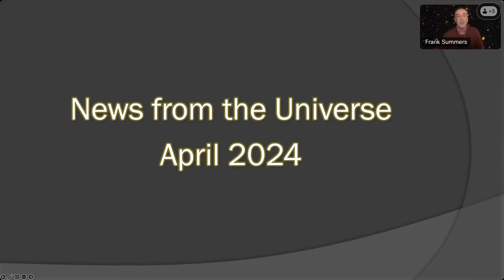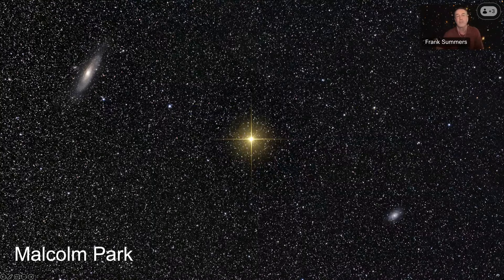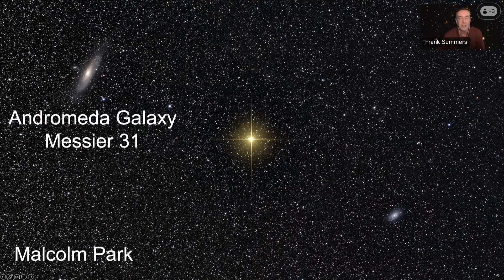And now the news from the universe for April 2024. I chose just one topic: the multi-wavelength views of NGC 604. Let's start with a broad view. This is an amazing image by astrophotographer Malcolm Park. Up in the upper left-hand corner is the Andromeda Galaxy, the nearest large galaxy to our Milky Way.